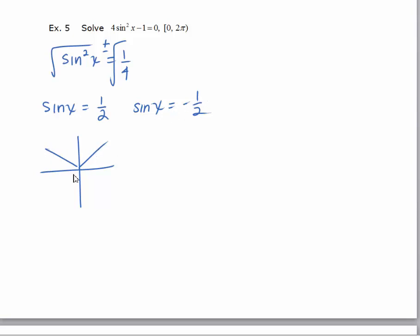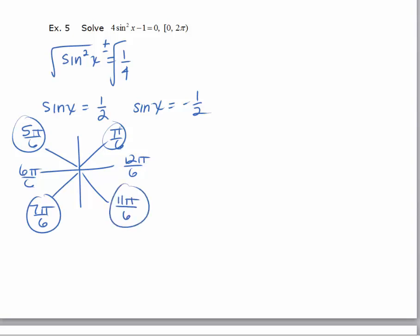The sine x equals positive 1 half will give me solutions in the first and the second quadrant. The sine x equals negative 1 half will give me solutions in the third and fourth quadrant. The reference angle, or the first quadrant angle whose sine is 1 half, is π over 6. And if we label our x-axis as 6π over 6 and 12π over 6, that will help us fill in the rest of our answers. So π over 6 was the first one, 5π over 6 would be the second, 7π over 6, and then 1 less than 12π over 6 would be 11π over 6. They're not looking for the general solution here, so these are your four solutions on the interval from 0 to 2π.